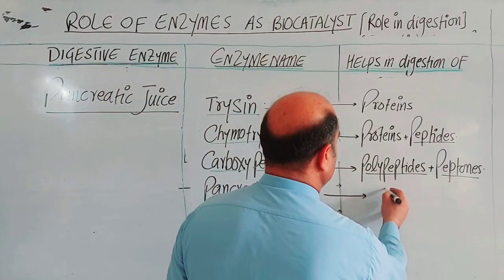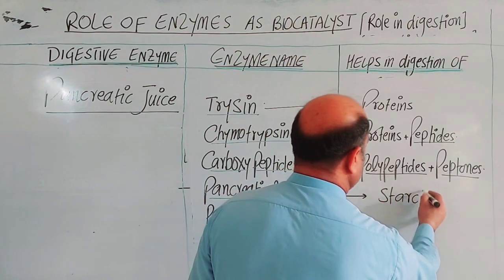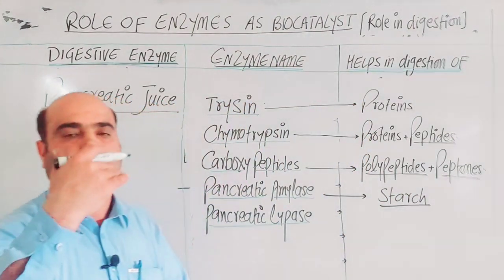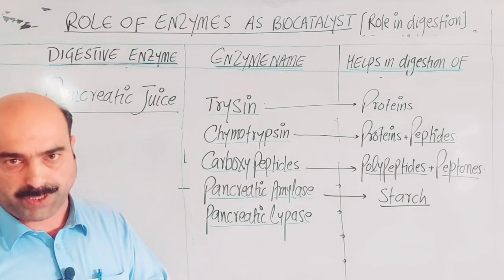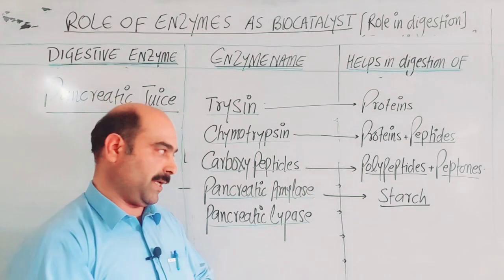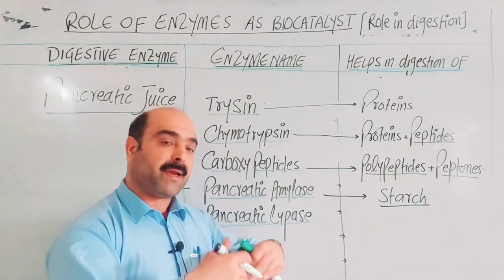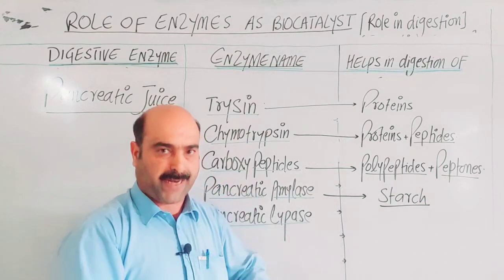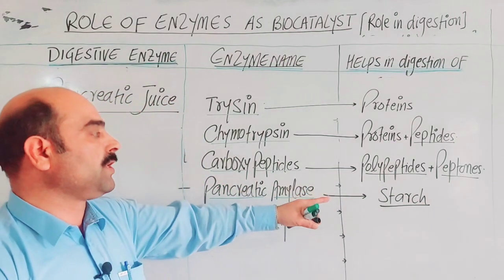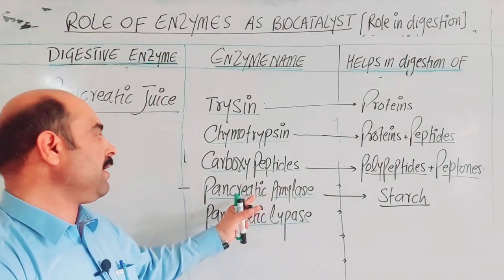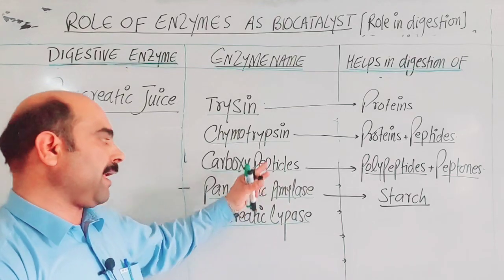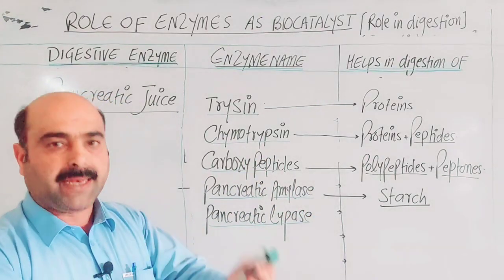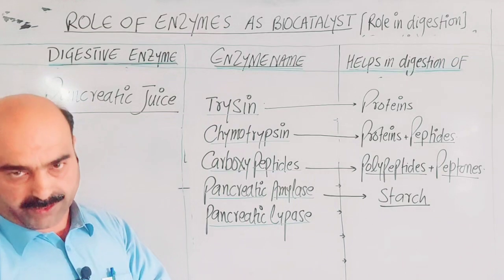Pancreatic amylase deals with starch. Starch digestion may have started in the mouth, but if complete digestion did not occur, any remaining starch in the small intestine is digested by pancreatic amylase, converting the remaining starch into glucose.